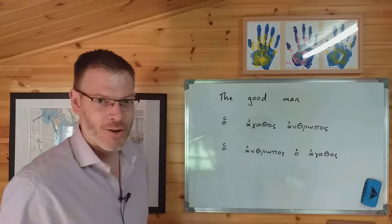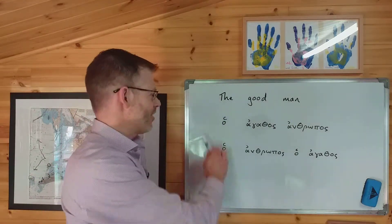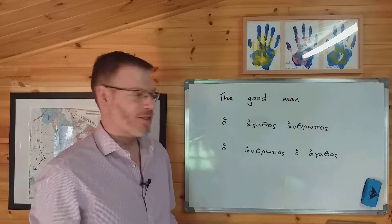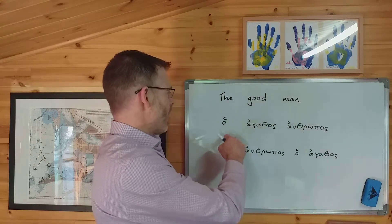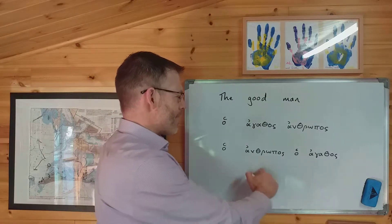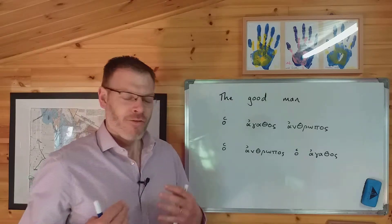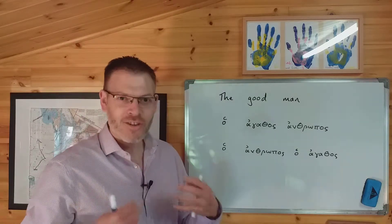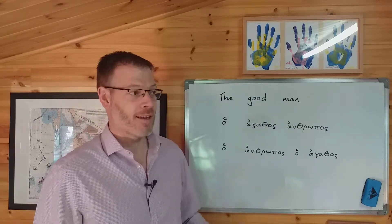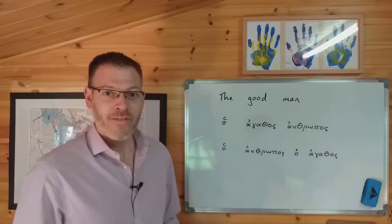In the previous video, we looked at how to use the adjective attributively when the definite article is present. So 'the good man' translates into Greek as 'ho agathos anthropos' if it's in the nominative, or literally 'the man, the good.' Those are the two word orders I encouraged you to remember. Think about literally glossing it in English and it will help you to recognise it in Greek — 'the good man' or 'the man, the good.' That's how to write it with the article.